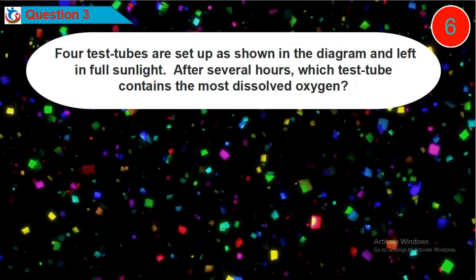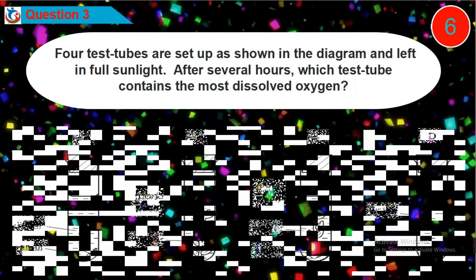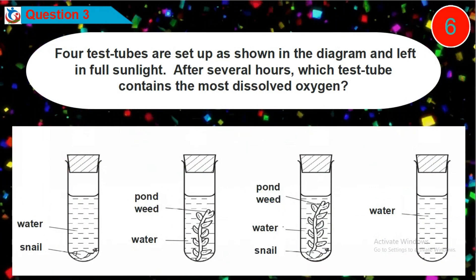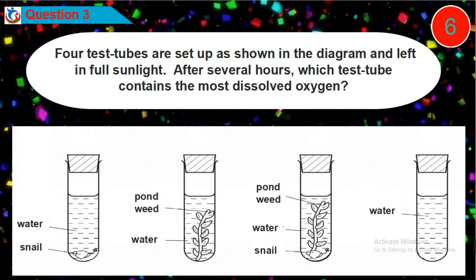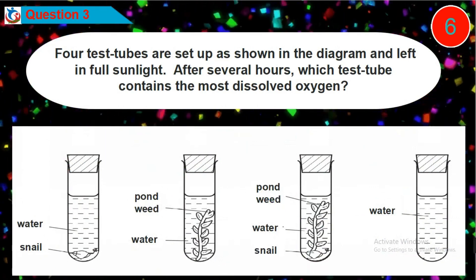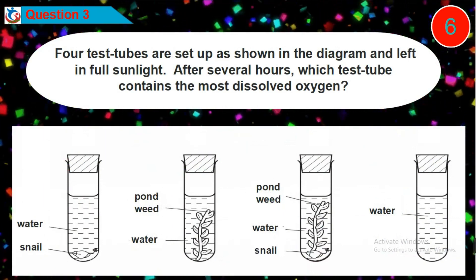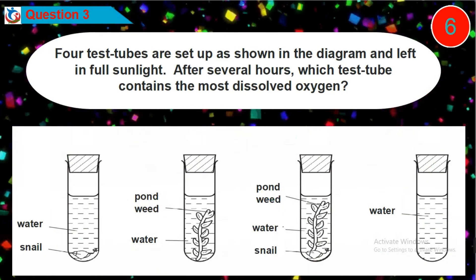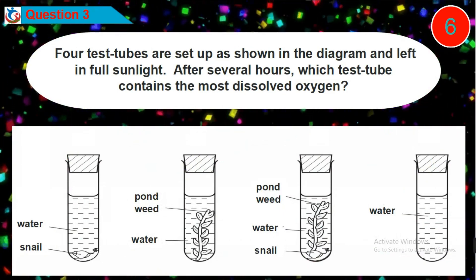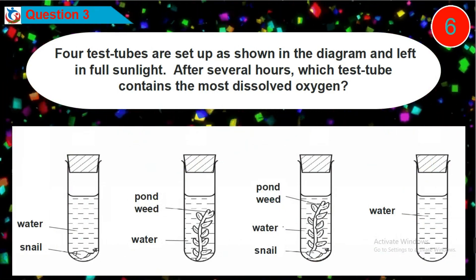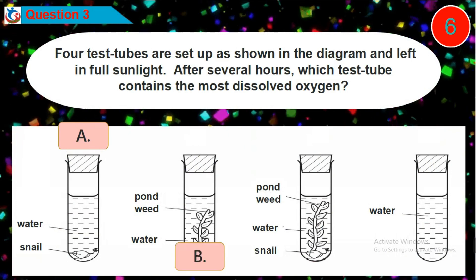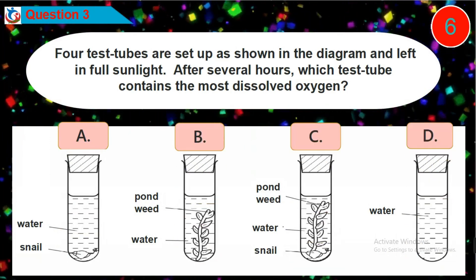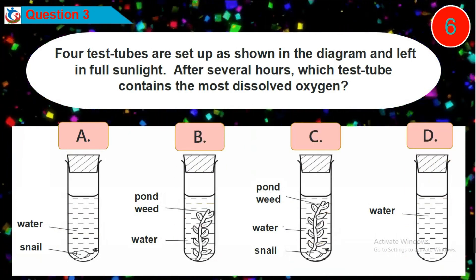Question three: four test tubes are set up as shown in the diagram and left in full sunlight. After several hours, which test tube contains the most dissolved oxygen? Is it option A, B, C, or D?